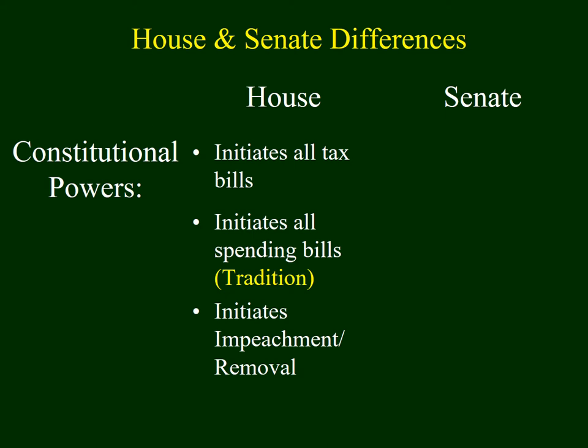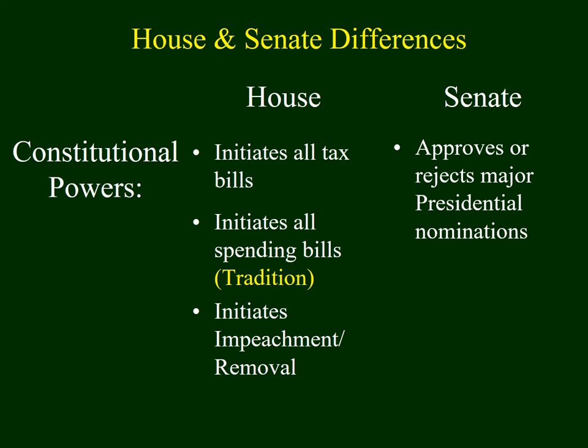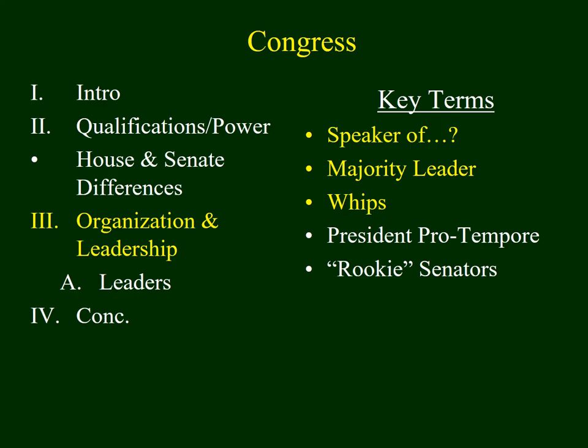The Senate also has special powers. In many ways, the Senate has the final say on several things. The Senate has the authority to either approve or reject major nominations made by the president, whether advisors or members of the judiciary. The Senate also has the authority to either ratify or reject a treaty negotiated by the president. Finally, the Senate has the final say when removing someone who's been impeached, as the Senate acts as a jury in the removal trial.